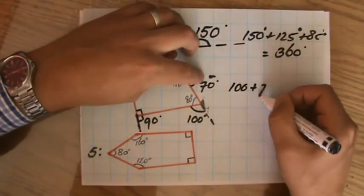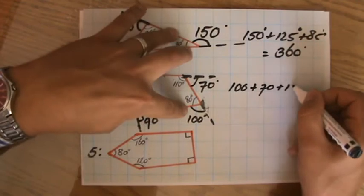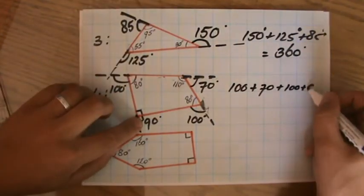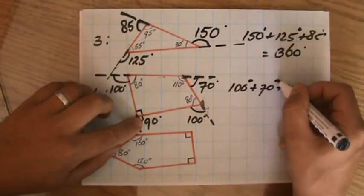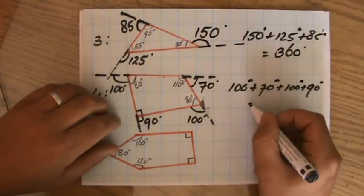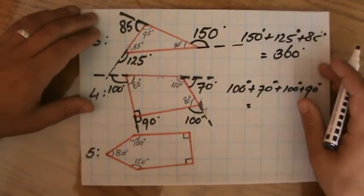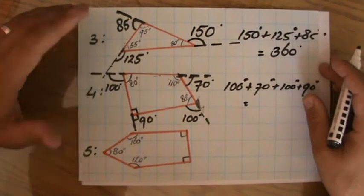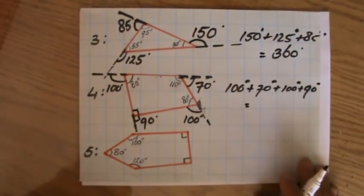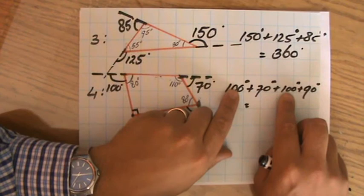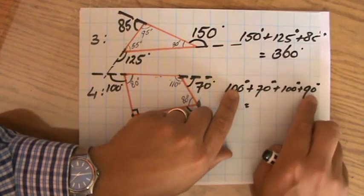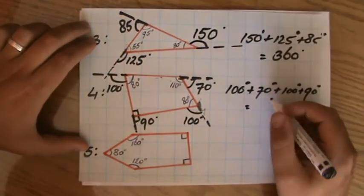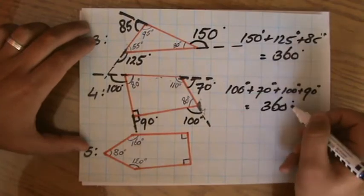Now again, the sum of the exterior angles for the quadrilateral are going to be 100 plus 70 plus 100 plus 90 degrees. Don't write down degrees Celsius by the way, there's always one student who does that - that's temperature, we're talking about degrees. What is the sum? Also 360 degrees, same as a triangle!